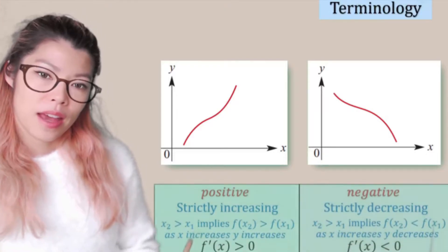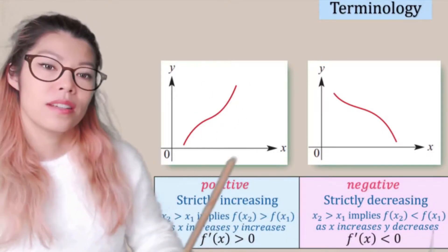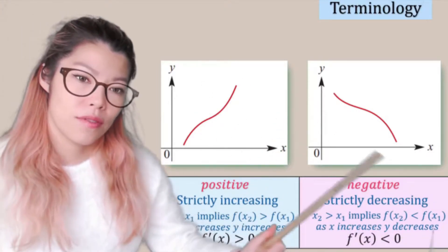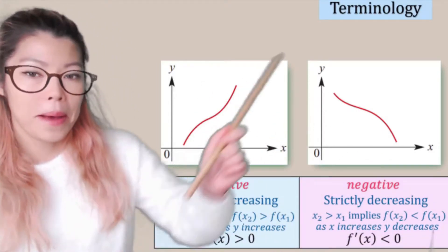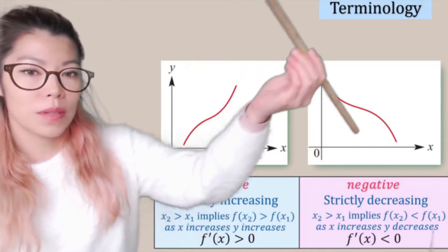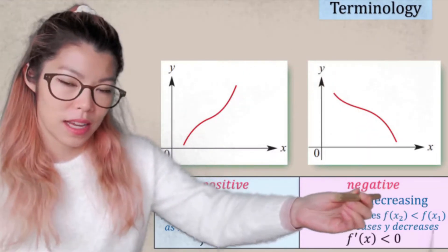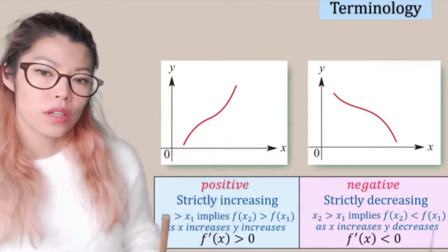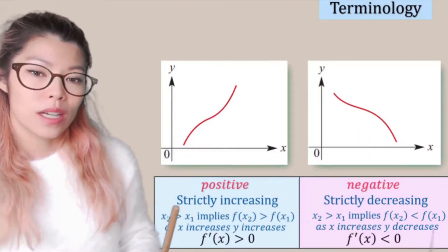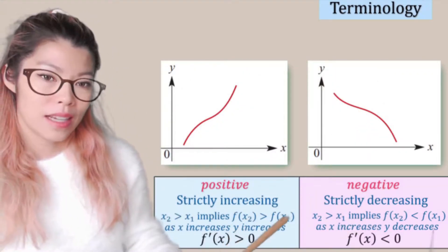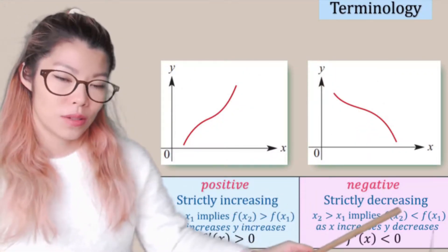Previously, we said that this is a positive and this is a negative graph. Something going up is positive, something going down is negative. But we're going to use the words strictly increasing and strictly decreasing.